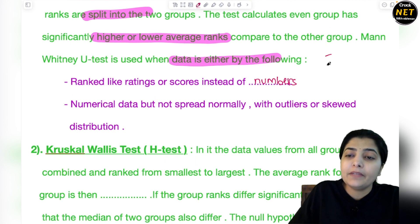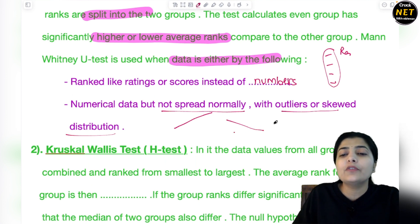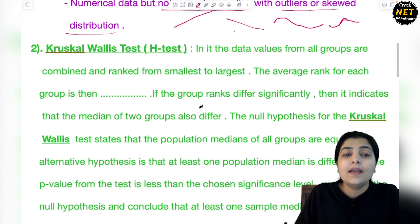It is used when data is either of the following: ranked like ratings or scores. With Mann Whitney test, you calculate data as ratings or scores instead of numbers. The next thing is numerical data but not spread normally, with outliers or skewed distribution. It doesn't look like a normal pie chart or normal graph sloping downwards or upwards - it's kind of skewed.